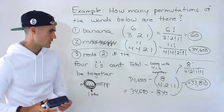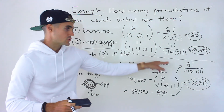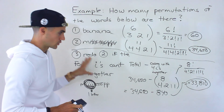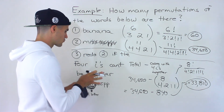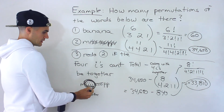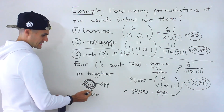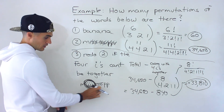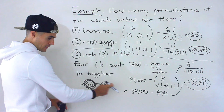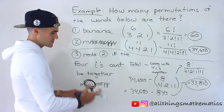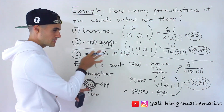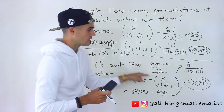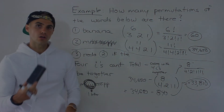So just be on the lookout for these kinds of questions. A lot of times it's easier to do it indirectly — take the total and subtract the opposite cases you're going for. If we tried to do this directly, it would be tougher because we'd have to account for where the four I's could be placed — at the beginning, in between, or at the end — and then rearrange all the other letters. There would be more cases to work with, so doing it indirectly gets the answer a lot quicker.